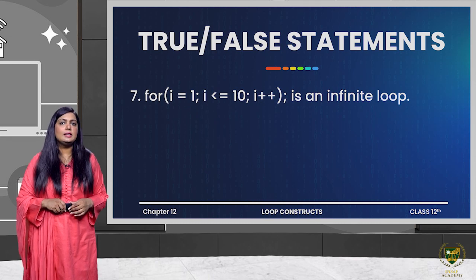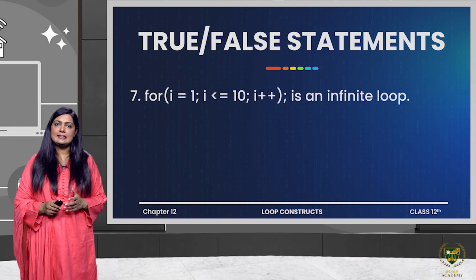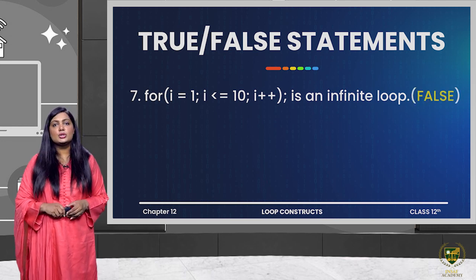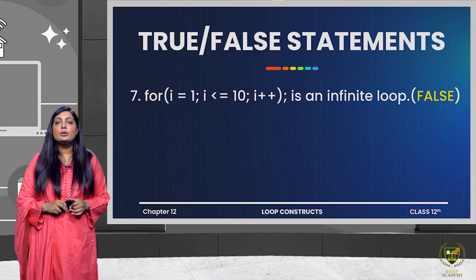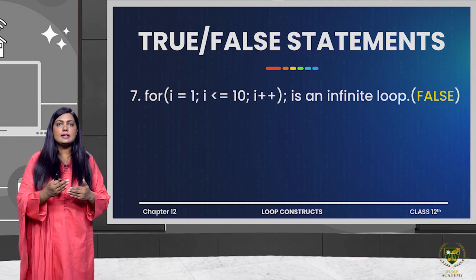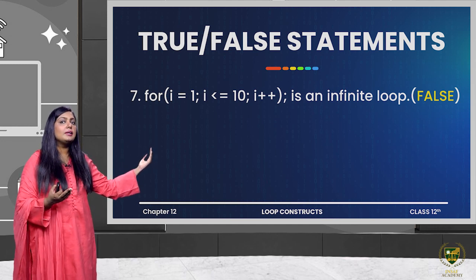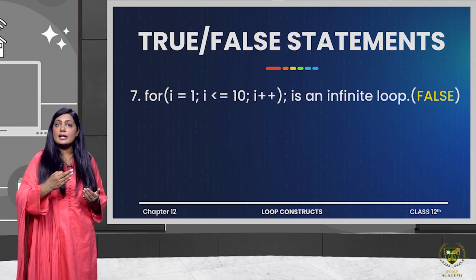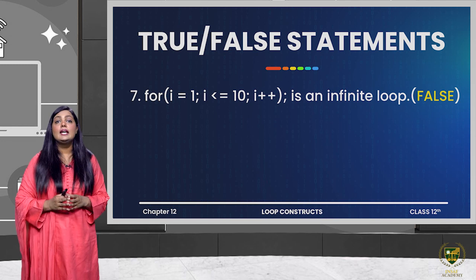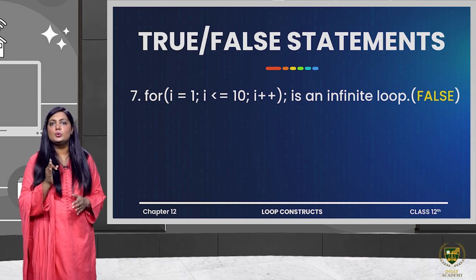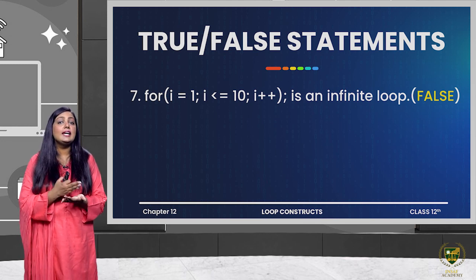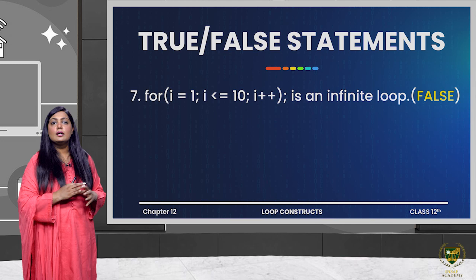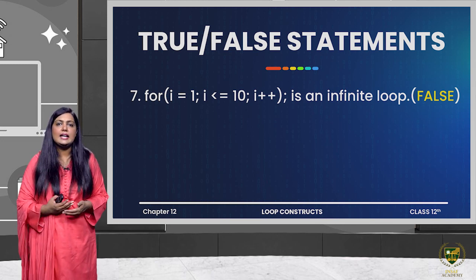The next statement: for(i=1; i<=10; i++) is an infinite loop — is it? It is not, because the initialization starts from 1, there is an increment i++, meaning the value goes from 1 to 2 to 3 and so on. The condition says until i is less than or equal to 10, so when i becomes 11 the condition is false, the loop terminates. This means the loop is finite, not infinite.